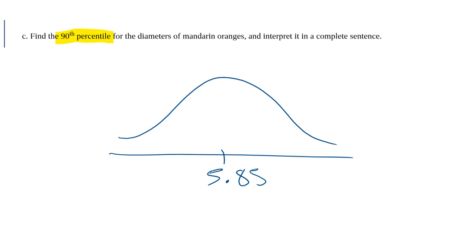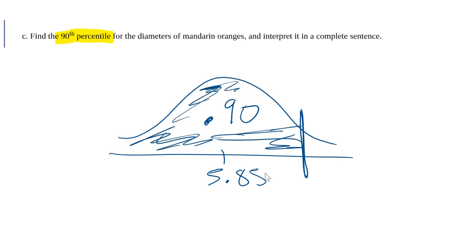And we want to find the 90th percentile, which will be somewhere way over to the right. And 90% or 90% of the distribution is going to be less than whatever that 90th percentile number is. And let me use the letter K to represent whatever that 90th percentile is. So to find K, we know that the area to the left is 0.9.